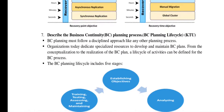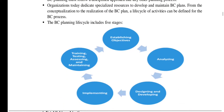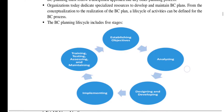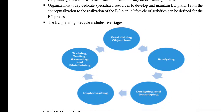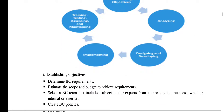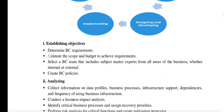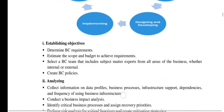The business continuity planning process has five stages: establishing objectives, analyzing, designing and developing, implementing, and then testing and maintaining. The explanation for each stage is given below.